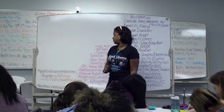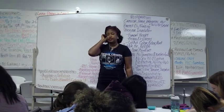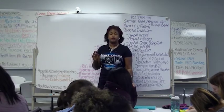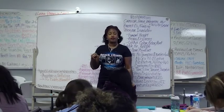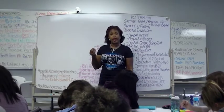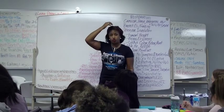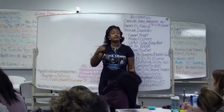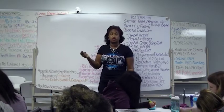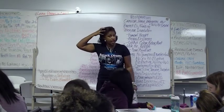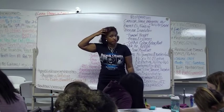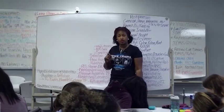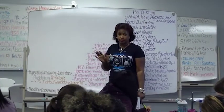Cephalohematoma can lead to jaundice, and remember how we tell the difference. The caput has a baseball cap — if you were to wear a cap, it crosses the suture lines. Whereas a cephalohematoma does not cross the suture lines. It's on one side or the other, and it is concerning.